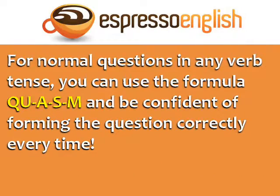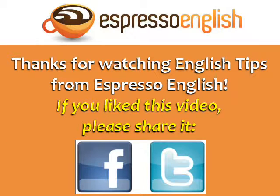For normal questions in any verb tense, you can use the formula: question word, auxiliary verb, subject, main verb — and be confident of forming the question correctly every time. Thanks for watching English tips from Espresso English. If you liked this video, please share it.